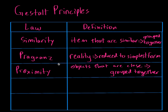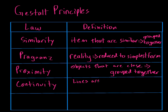The next law is the law of continuity. The law of continuity basically says that lines are seen as following the smoothest path.